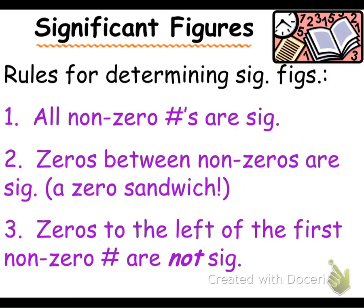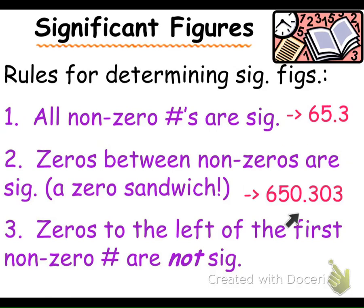All non-zero numbers are significant, so in 65.3, all non-zero numbers are significant, so that has three significant digits. The next rule is zeros between non-zeros are significant. We call it a zero sandwich, so here I've got a zero and a zero, both in between non-zeros, so there are six significant figures there.